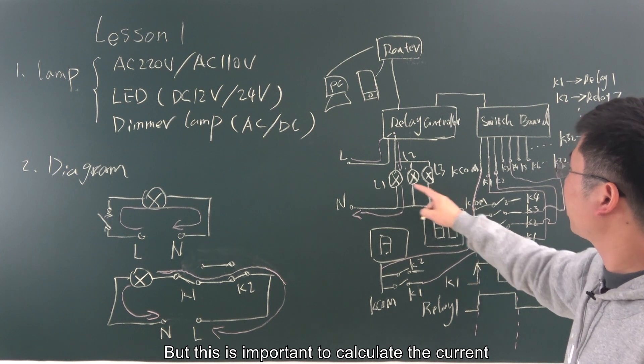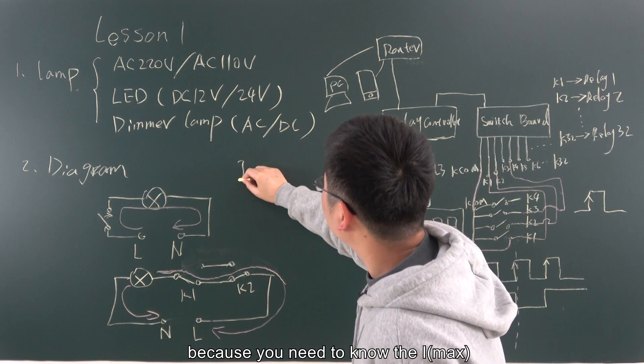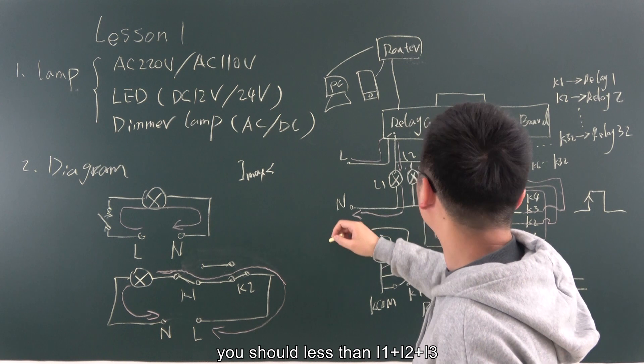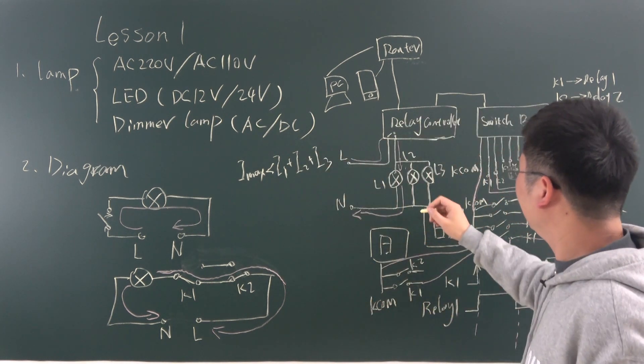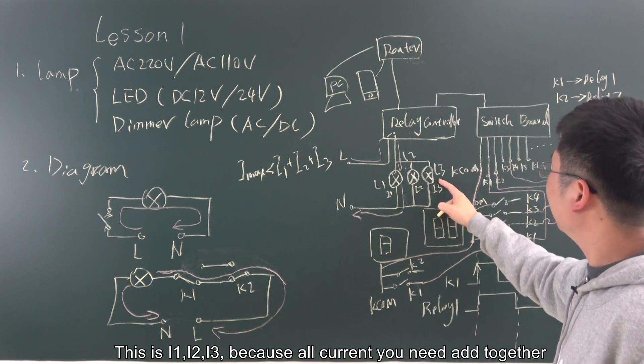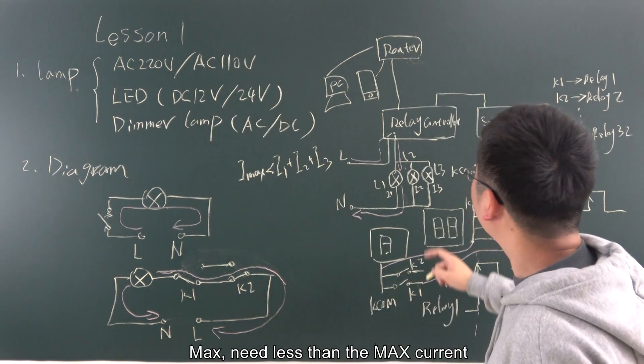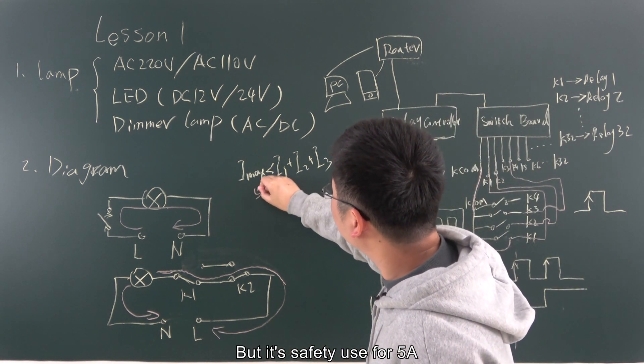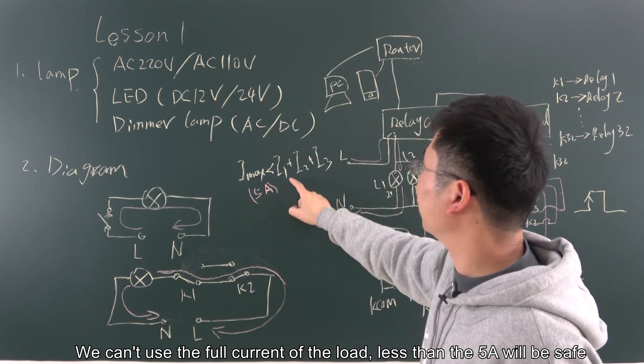But this is important to calculate the current, because you need to know the I max, the max current of the relay 1. You should less than the I1 plus I2 plus I3. Because all current you need to add together. I need less than the max current. We use the relay is 10 ampere. But the safety is used for 5 ampere. We can't use the full current of the load. So less than the 5 ampere will be safe.